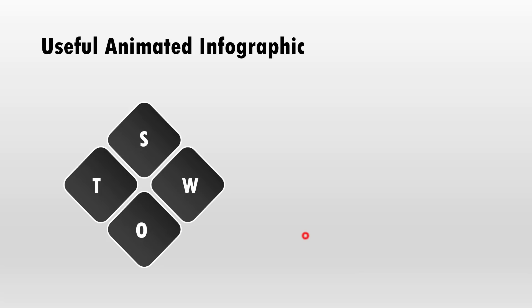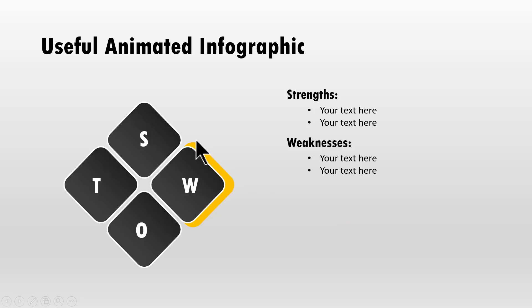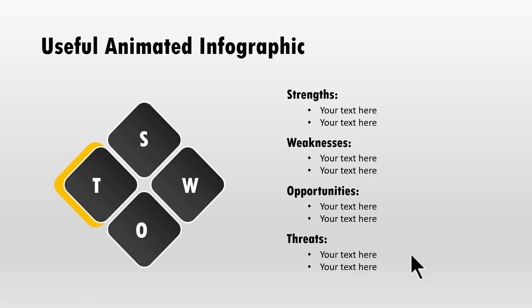The animated infographic you will learn to create today looks like this. You can use this for any 2x2 matrix or any model that has four components. On a click, you bring attention to the first component. Then on a click, you move attention to the second component while the first one fades away. Then the third component is highlighted with its text, and on the next click the fourth component is highlighted. It's a very useful, practical animated infographic which is very easy to learn and create. I'll show you how to do this from scratch.